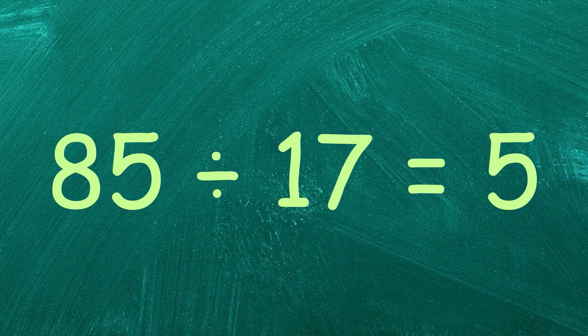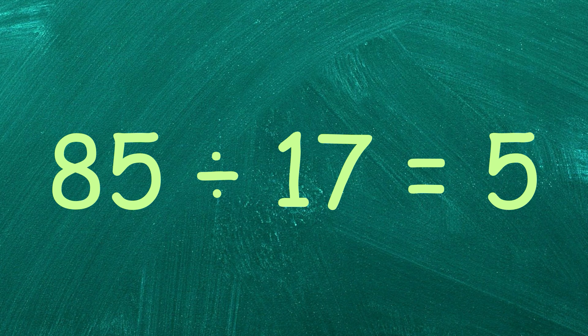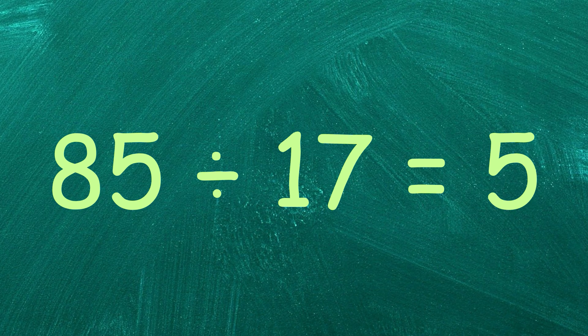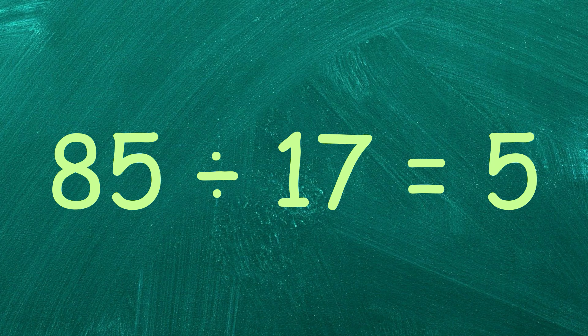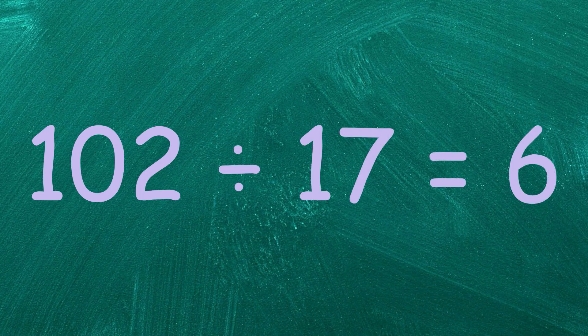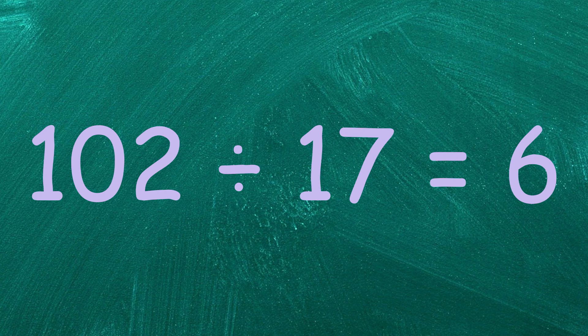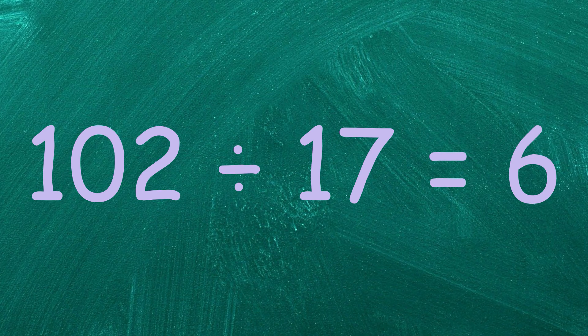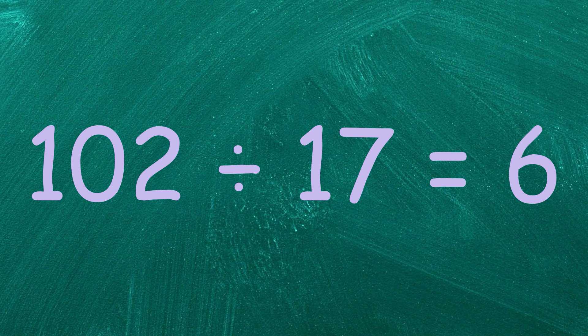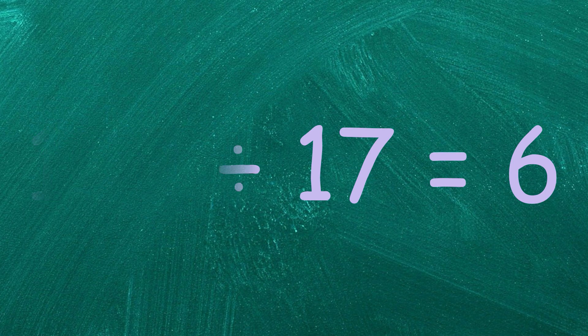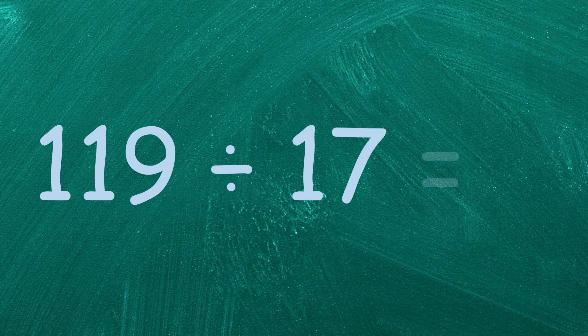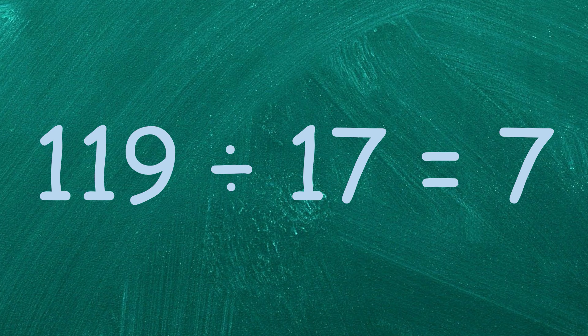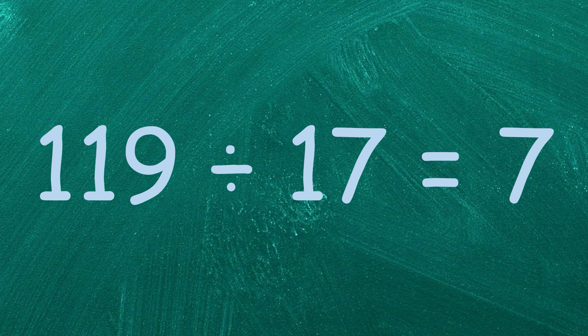85 divided by 17 equals 5. 102 divided by 17 equals 6. 119 divided by 17 equals 7.